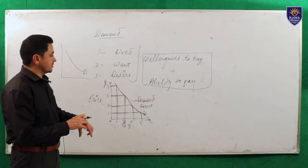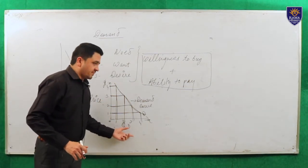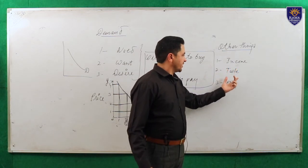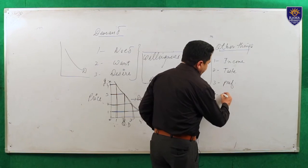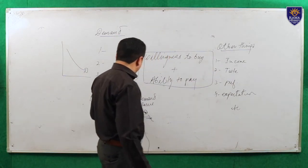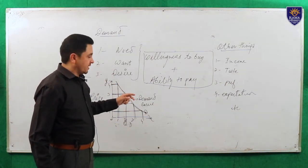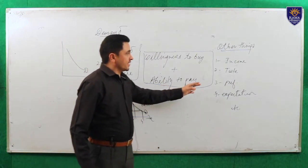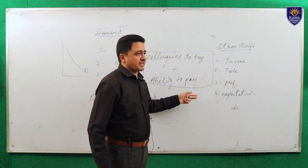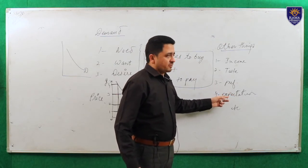What do you mean by law of demand? There is inverse relation between price and quantity demanded — and one important thing to add: when other things are constant. Other things include income, taste, preferences, and expectations. When you are describing the law of demand, income should be constant, taste should be constant, preferences should be constant, and expectations should be in constant form.